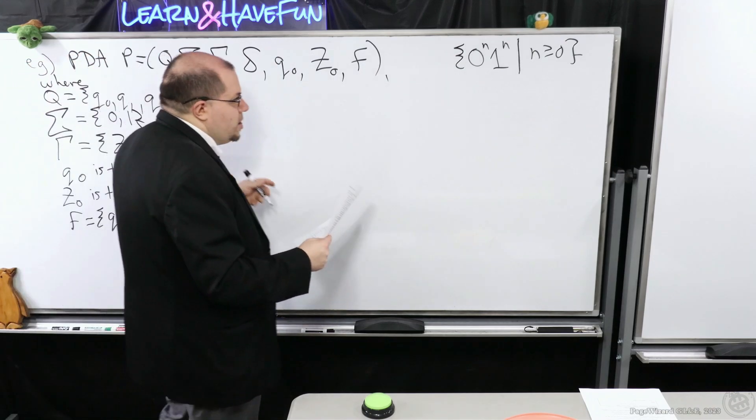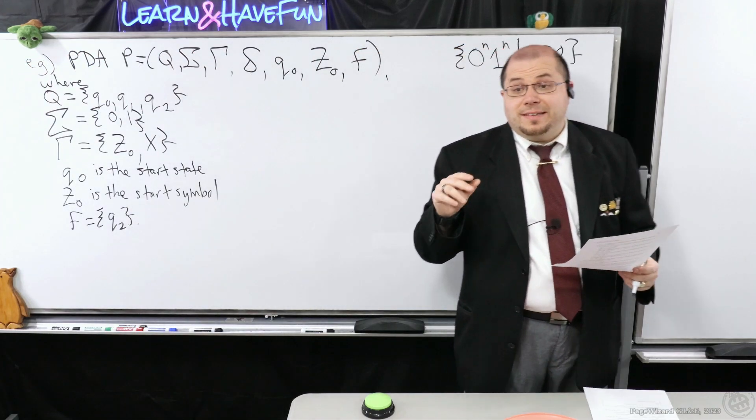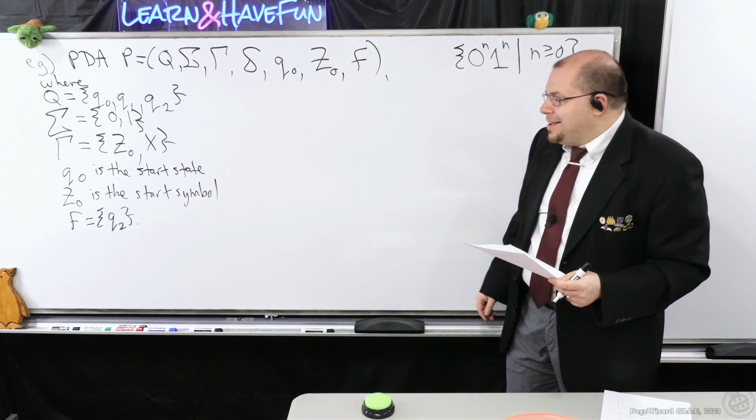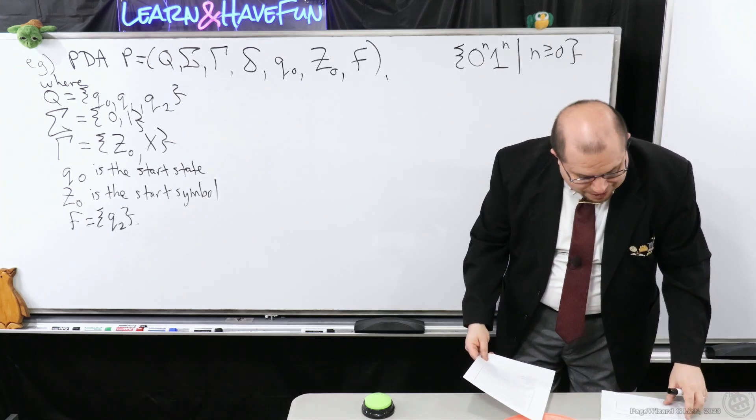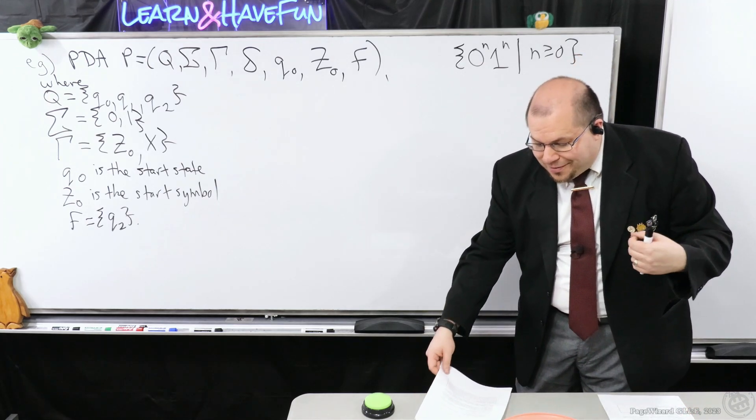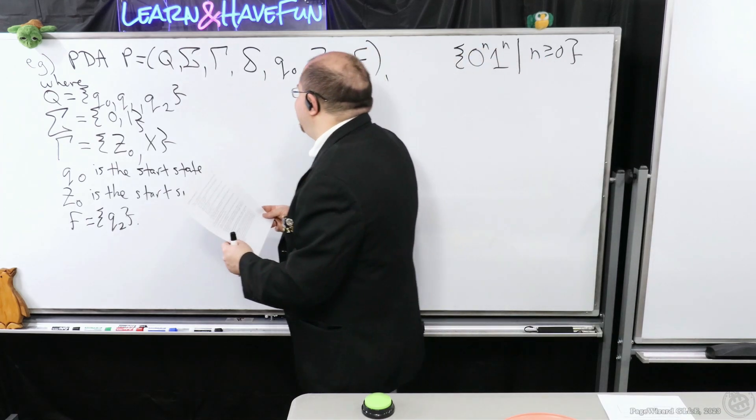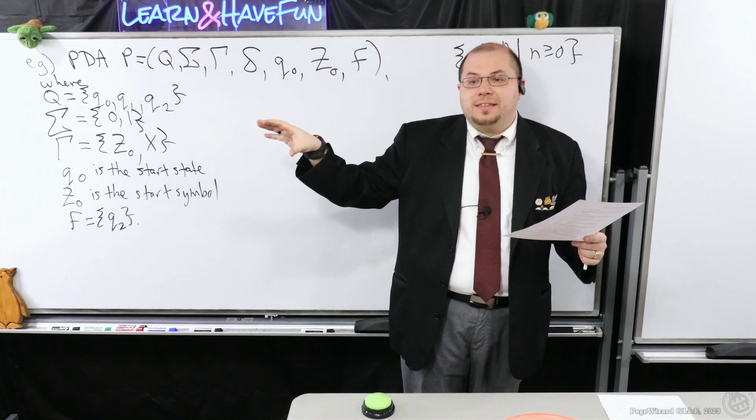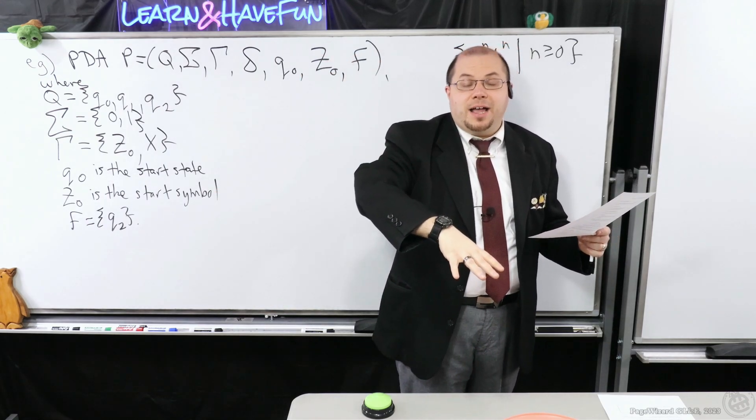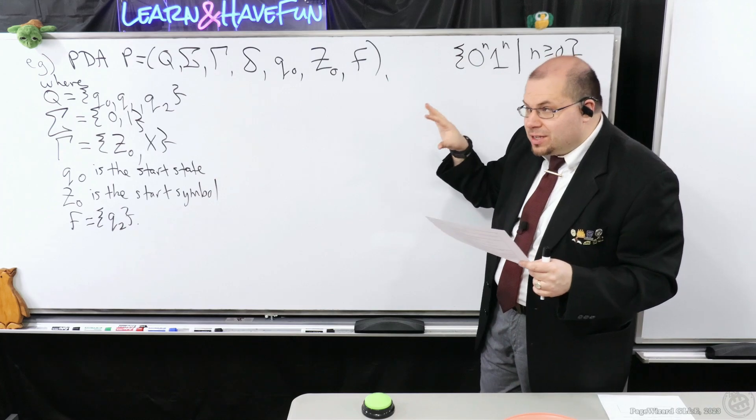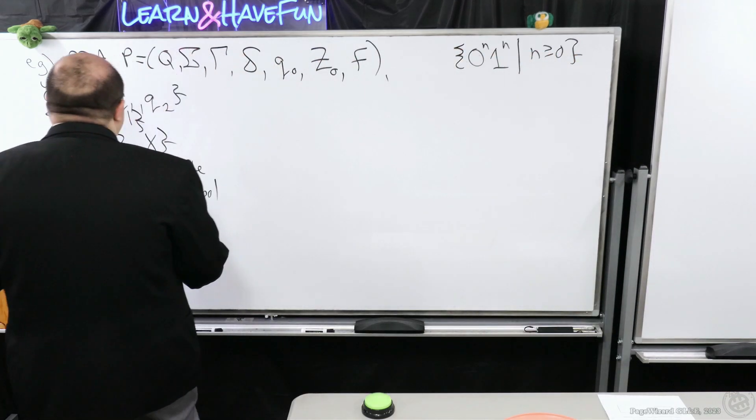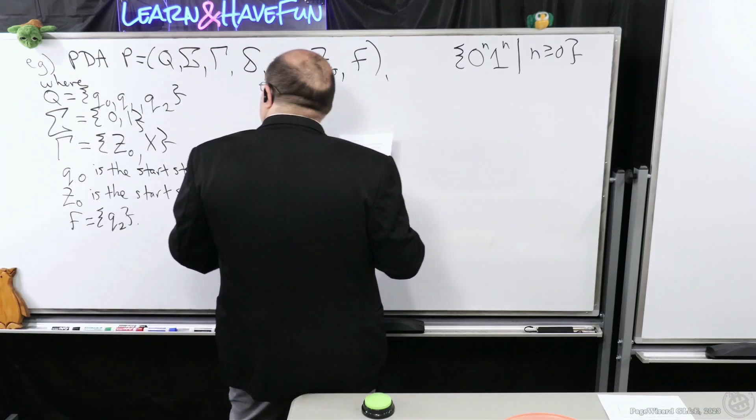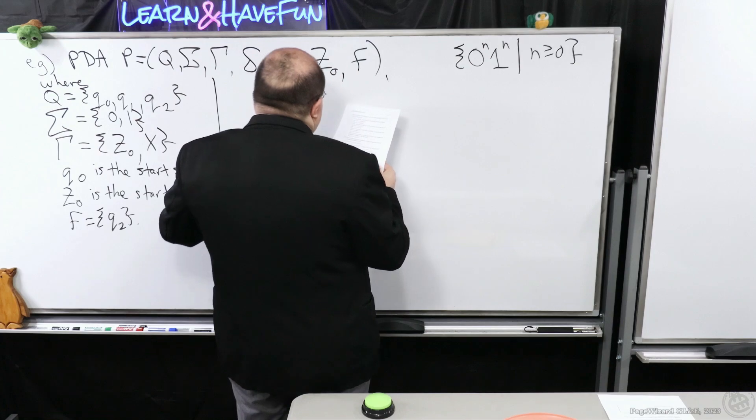But I'm going to define the set of final states that only contain Q2. This is going to correspond to our third phase in our previous example, when we had our game plan for how you design the PDA. So now that I've defined those, I need to actually give you a definition of delta, the transition function. I'm going to do it formally, and then I'm going to show you how we can represent this using a transition diagram.